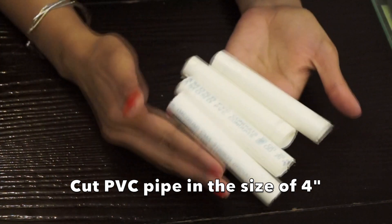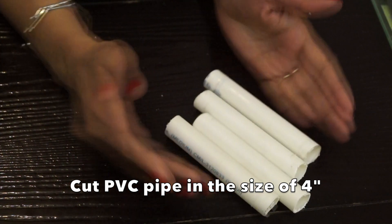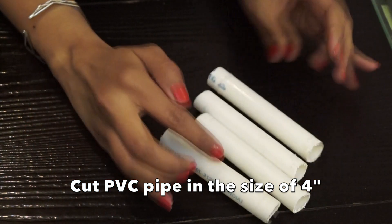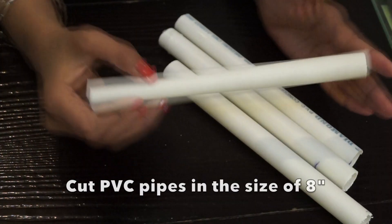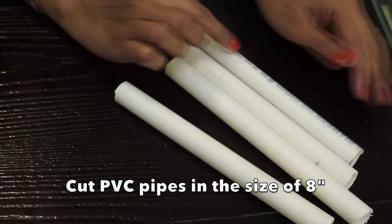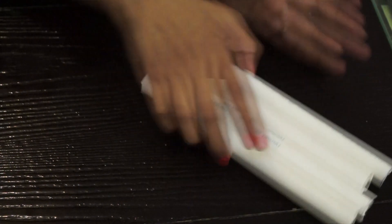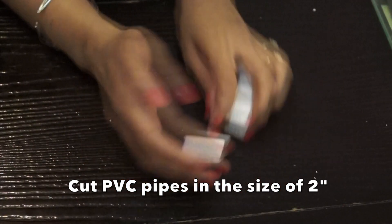Next, I will need 4 more PVC pipes in the size of 4 inches. With the help of these, we are going to make legs of the table. Next, we need 4 more PVC pipes in the size of 8 inches. And again 4 in 2 inches.